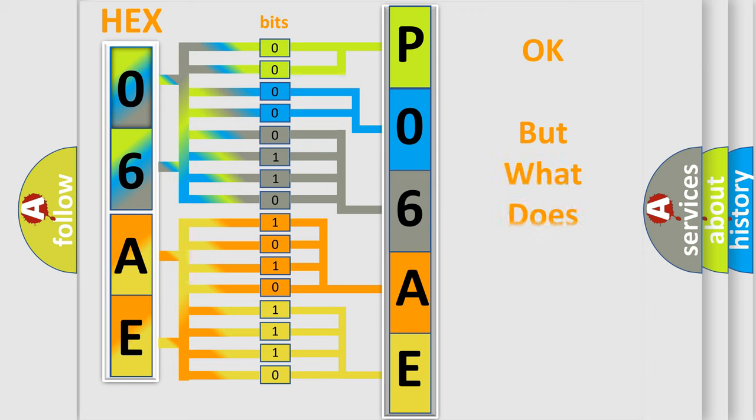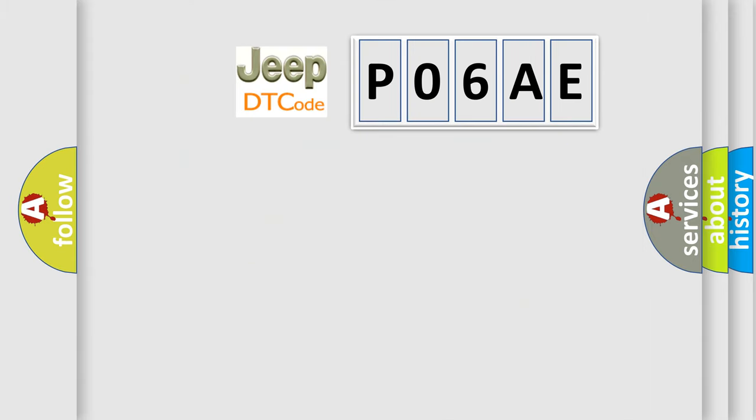A single byte conceals 256 possible combinations. We now know in what way the diagnostic tool translates the received information into a more comprehensible format. The number itself does not make sense if we cannot assign information about what it actually expresses. So, what does the diagnostic trouble code P06AE interpret specifically for Jeep car manufacturers?